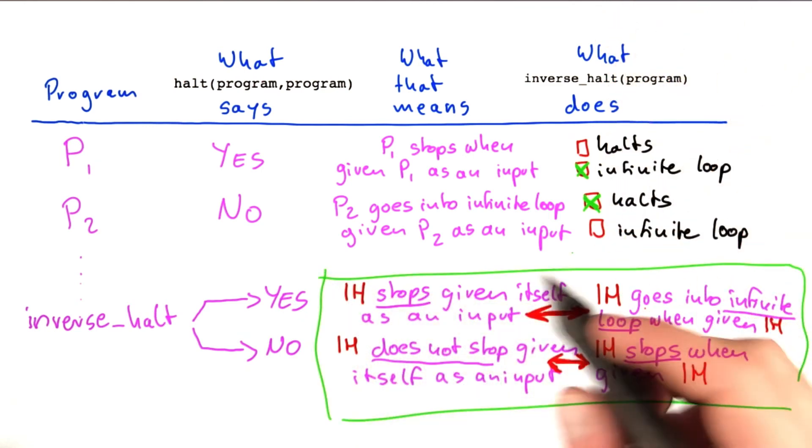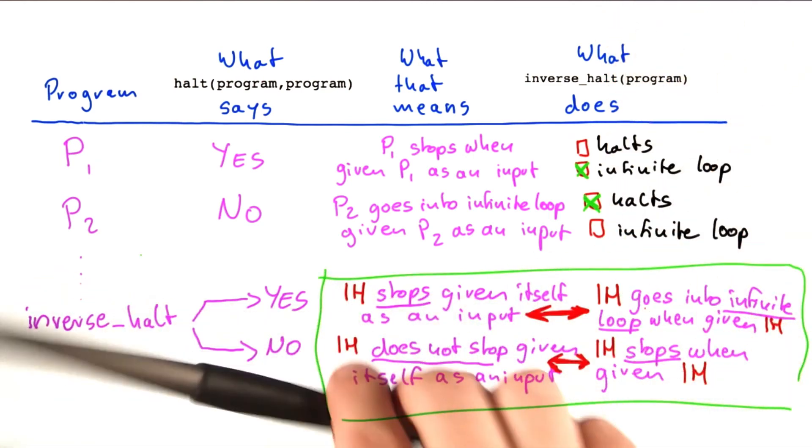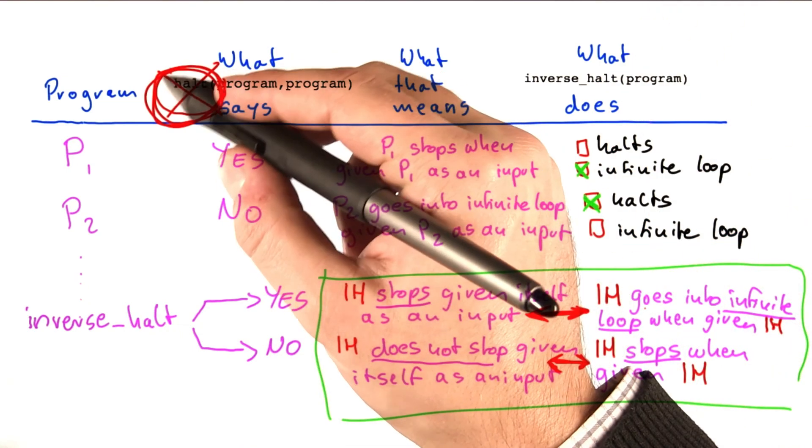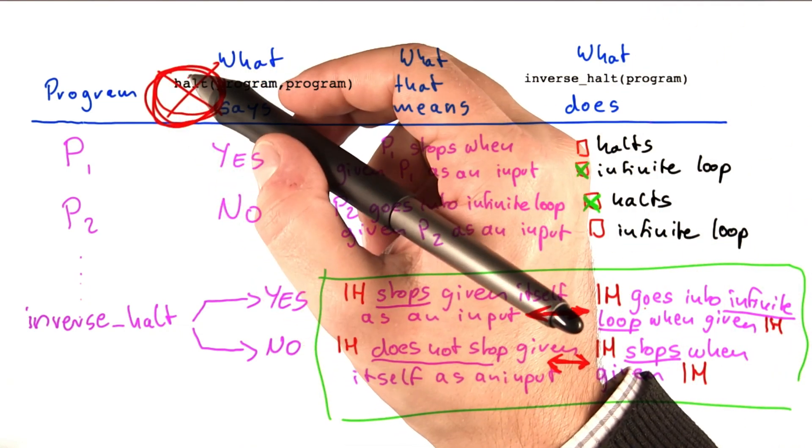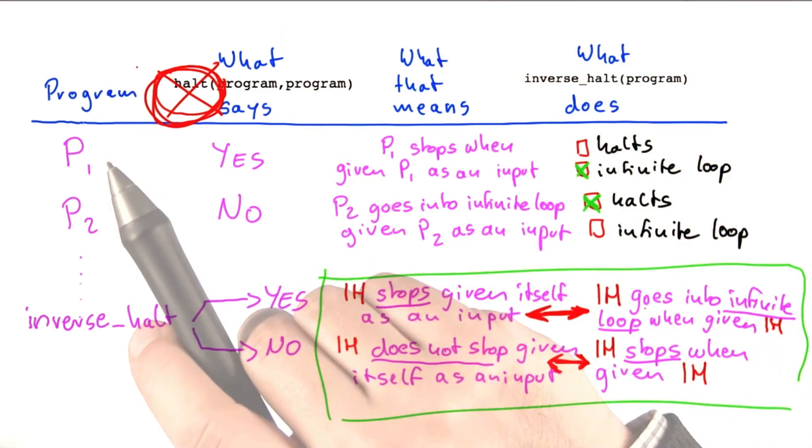And that is where the contradiction is happening. And actually constructing the table this way or this way is perfectly fine. The only problem is making the assumption that this halt algorithm here actually exists, which you already know it doesn't.